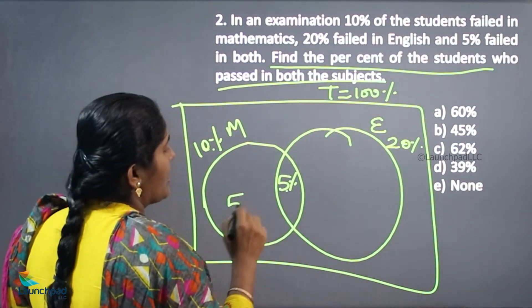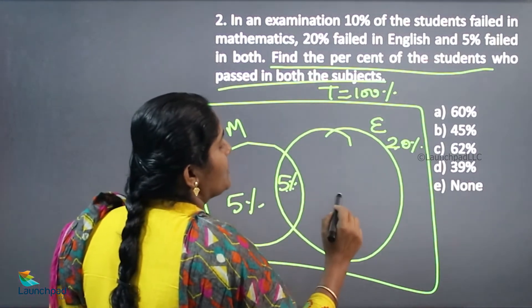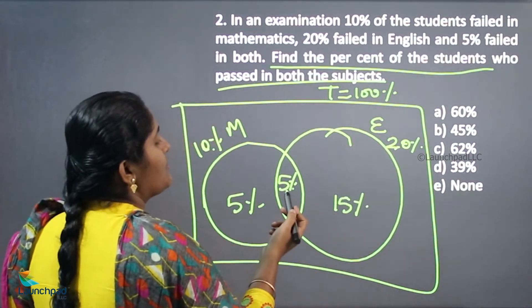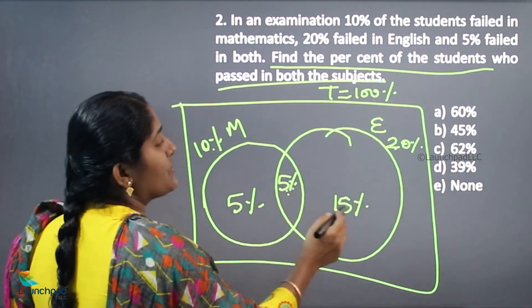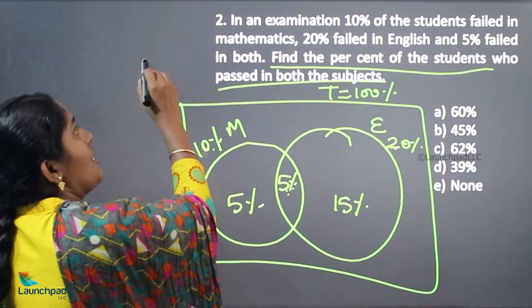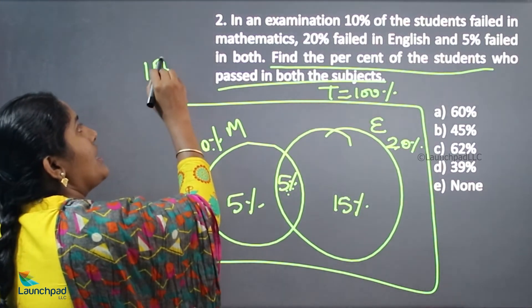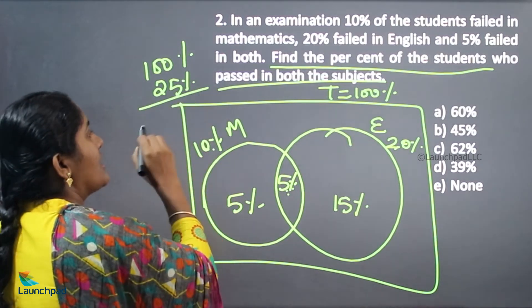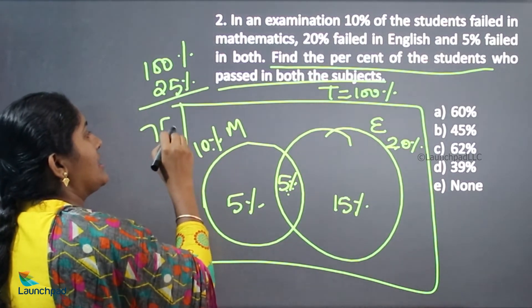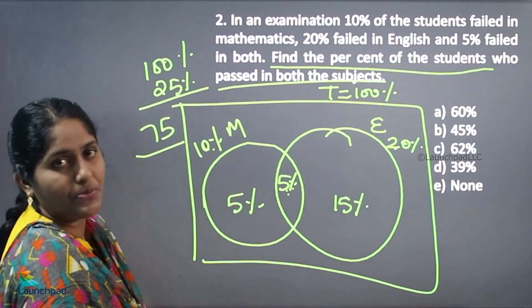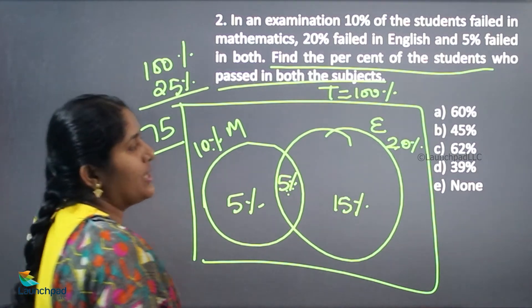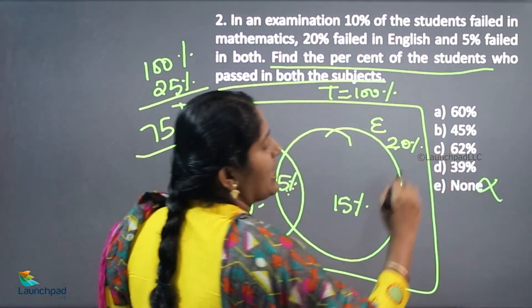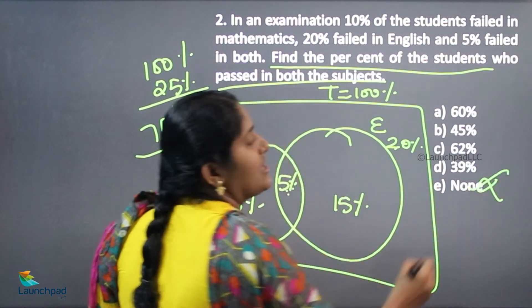10 minus 5 is 5 percentage. 20 minus 5 is 15 percentage. 5 percentage plus 5 percentage is 10, and 10 plus 15 is 25 percentage. From your total 100 percentage, 25 percentage failed in the entire subjects. The remaining is your pass percentage. Hence, the 75 percentage is not available, so the answer is none of these.